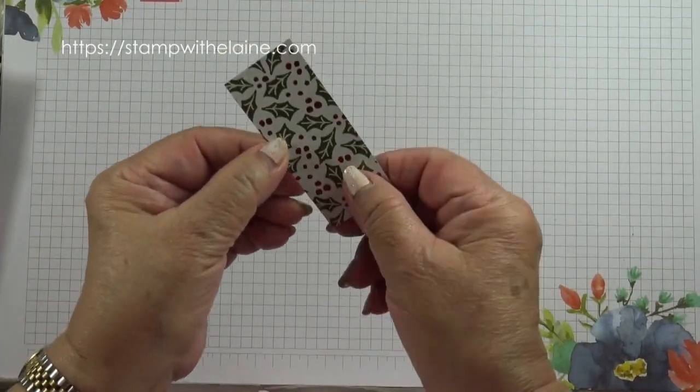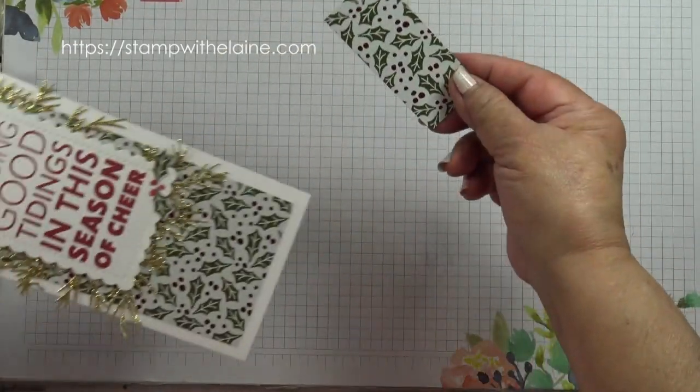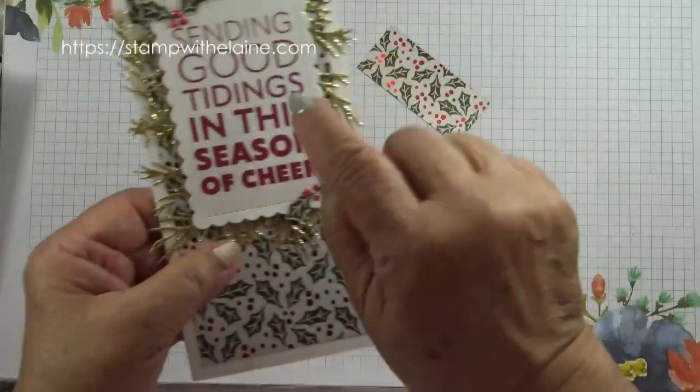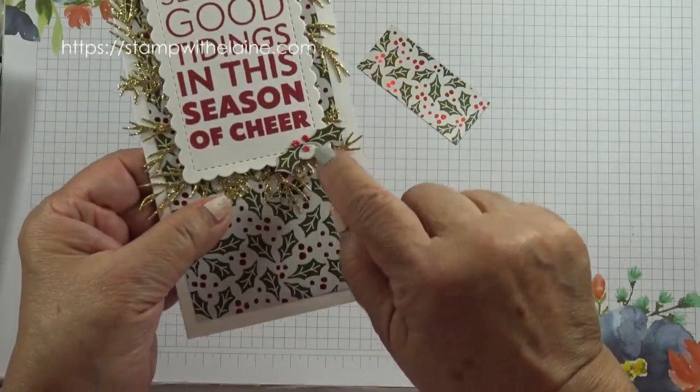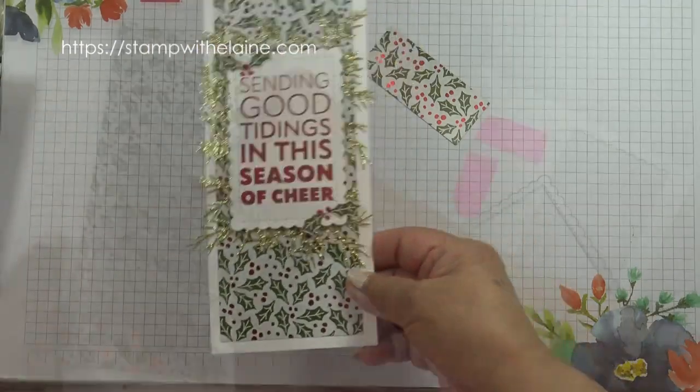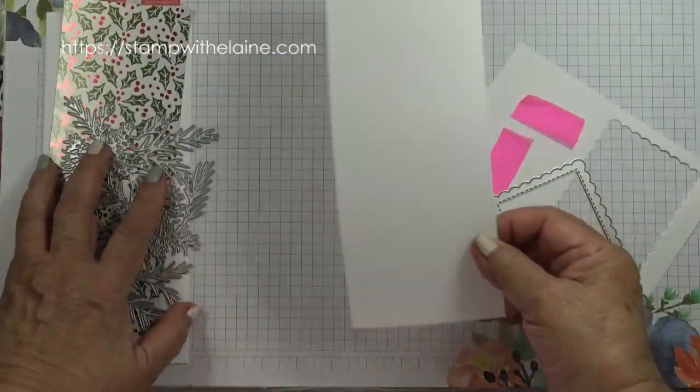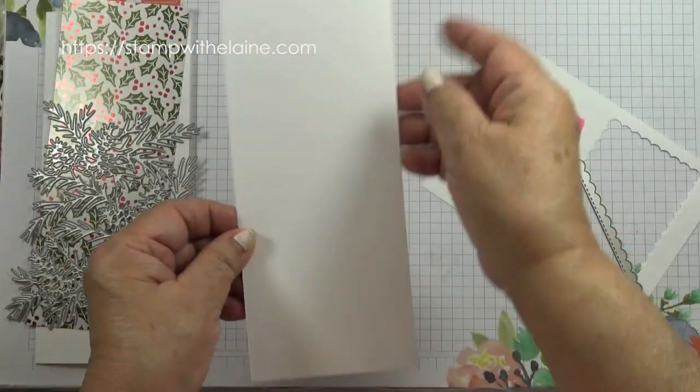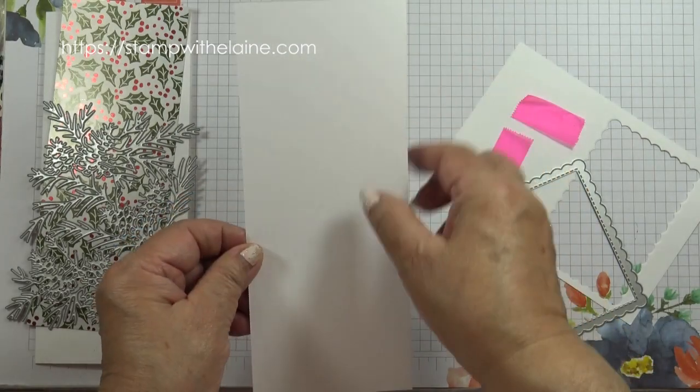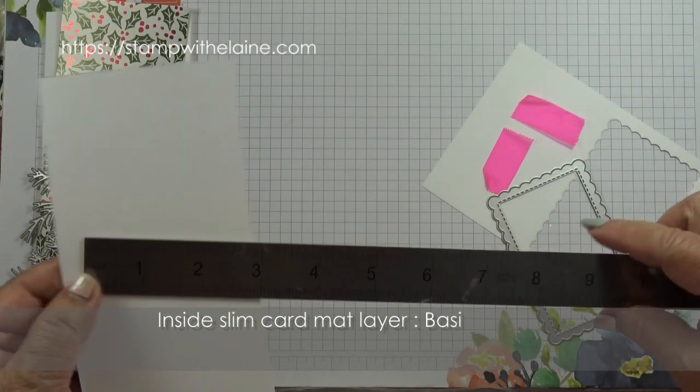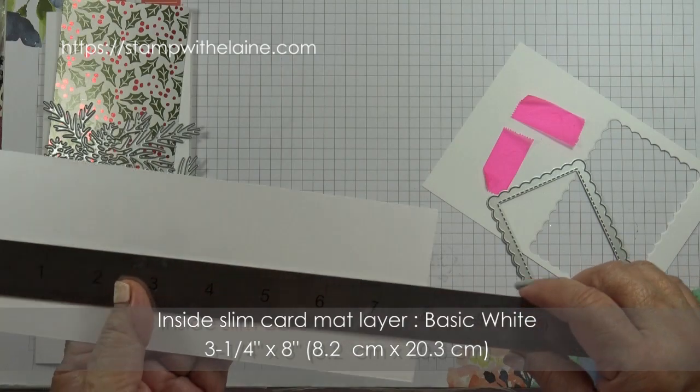And that will give you the mat layer for your square card. Don't discard this because we're going to cut up the holly leaf to put on the card here to decorate the card. The long slim card also has an inside layer, and this measures three and a quarter inches by eight inches.